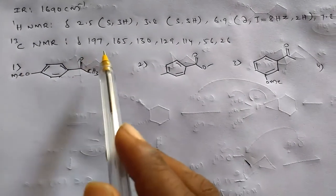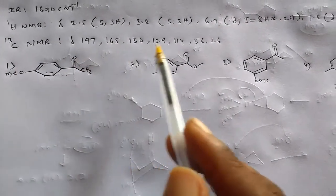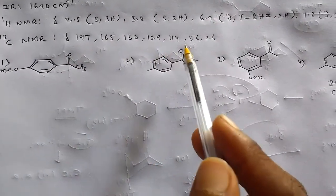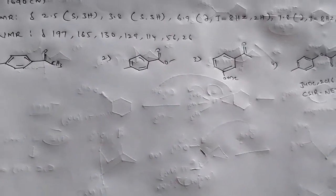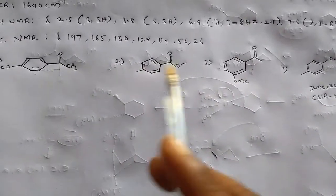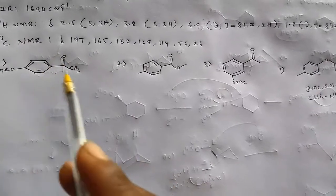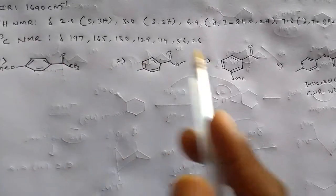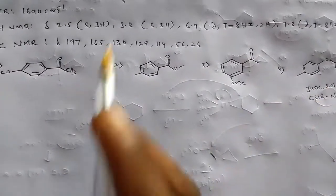The ¹³C NMR shows delta values at 197, 165, 130, 129, 114, 156, and 26 ppm. From this spectral data we need to find the correct structure of the organic compound.